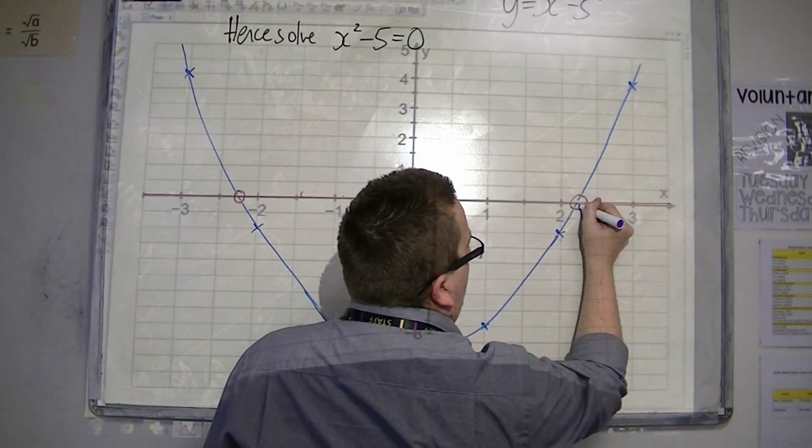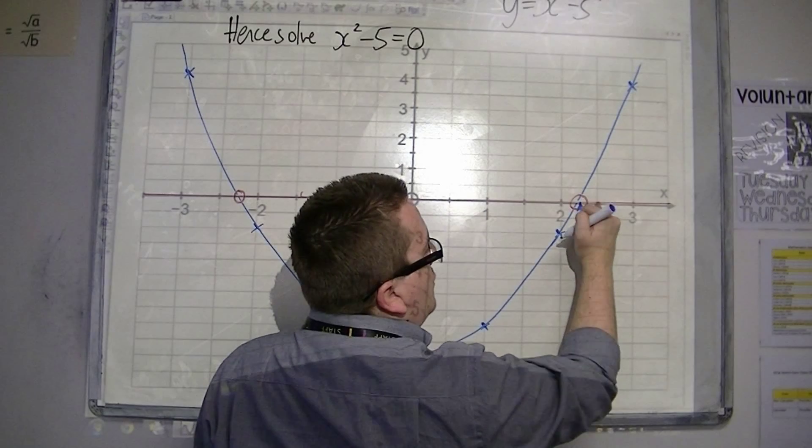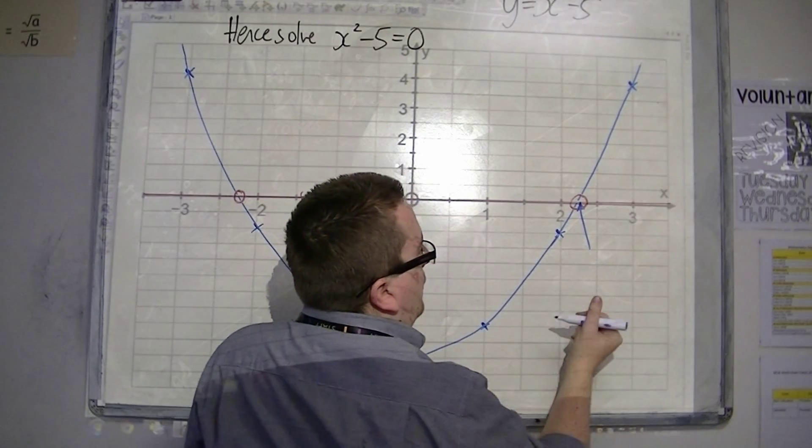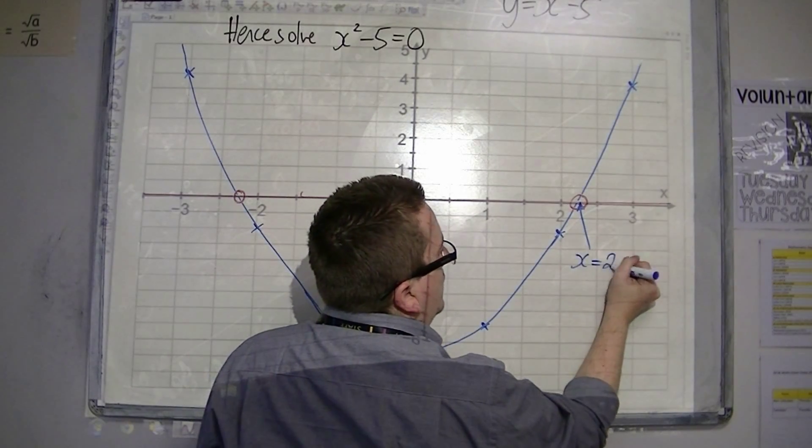I'm looking at my graph and I'm thinking, well, that's 2, that's 3, that's 2.5. So, that would be 2.25. So, it's a little bit less than 2.25. I'd probably say x is equal to 2.2.